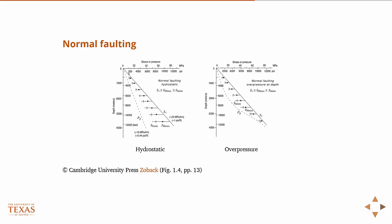In normal faulting, according to Andersonian fault theory, the vertical stress is greater than SH max is greater than SH min, right? And so these plots are a little bit hard to read, but I'll try to put some color on them. The vertical stress is this line, and we know in a normal faulting regime that's the greatest, the largest value.